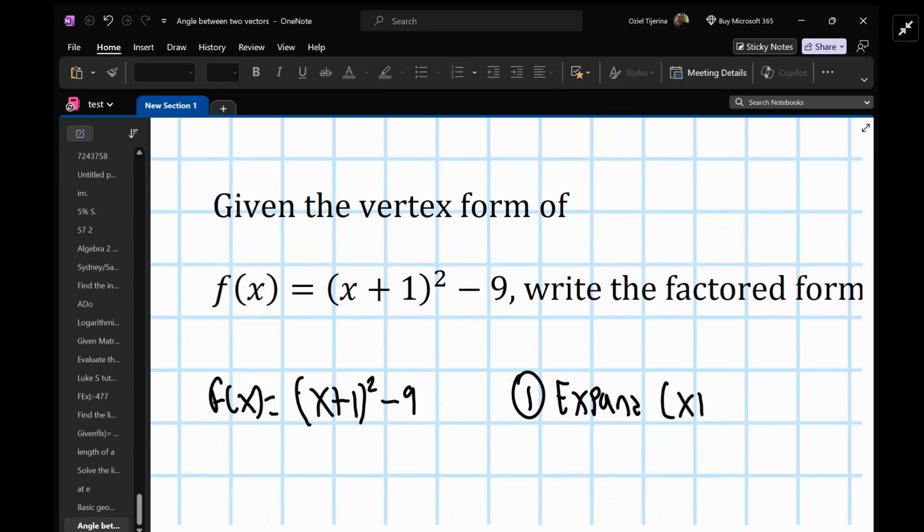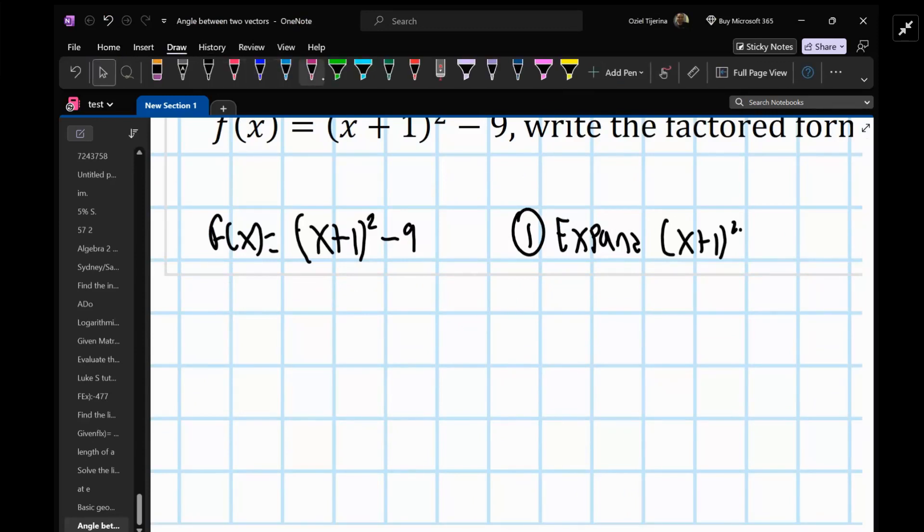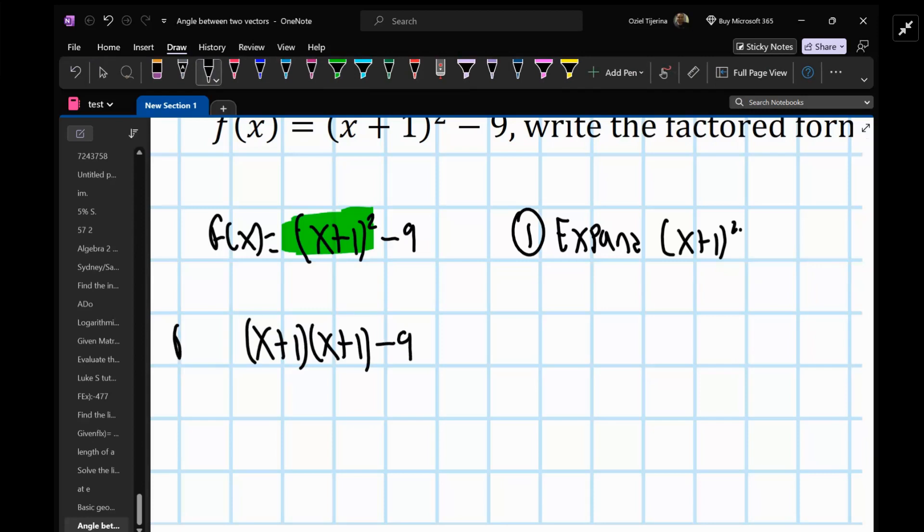So if we do this, you want to try and do the FOIL method if you can. So (x + 1)(x + 1) - 9. You can use the binomial squared pattern, but if you don't know how to do that, you can just go with this. So we have x² + x + x + 1 - 9.